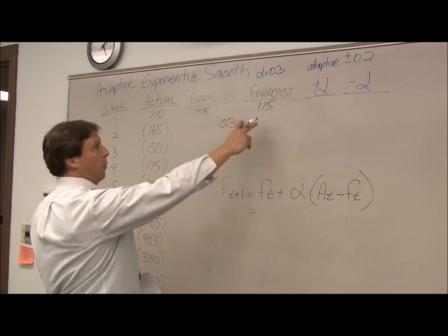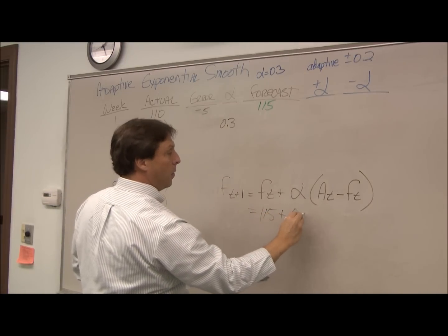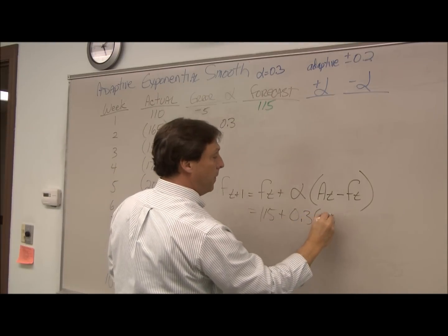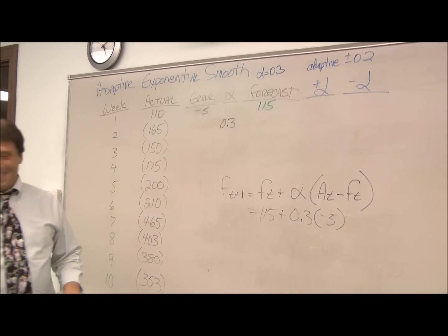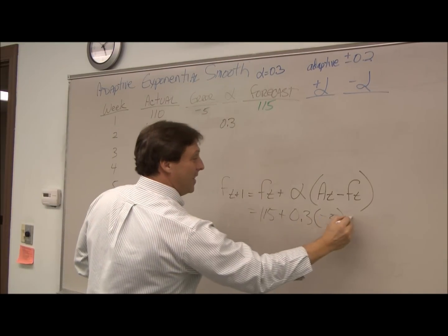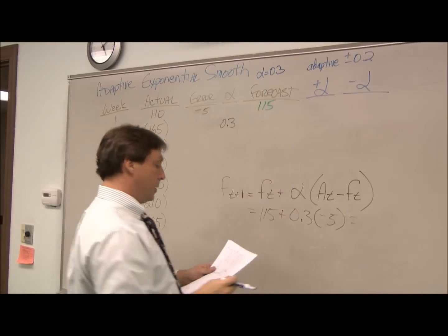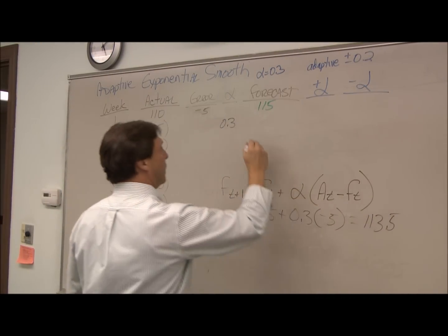So our week 1 forecast was 115, our alpha 0.3, and our error was minus 5. I know I say 'error' weird—deal with it. If we multiply that out, we should come out to 113.5 as a forecast here.